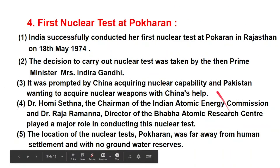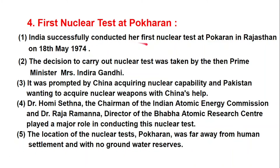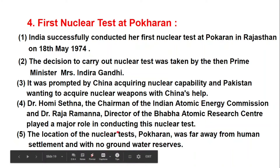India successfully conducted her first nuclear test at Pokharan in Rajasthan on 18th May 1974. The decision to carry out the nuclear test was taken by the then Prime Minister, Mrs. Indira Gandhi. It was prompted by China acquiring nuclear capability and Pakistan wanting to acquire nuclear weapons with China's help. Dr. Homi Sethna, the chairman of the Indian Atomic Energy Commission, and Dr. Raja Ramanna, director of the Bhabha Atomic Research Center, played a major role in conducting this nuclear test.